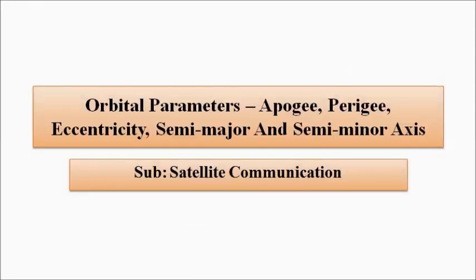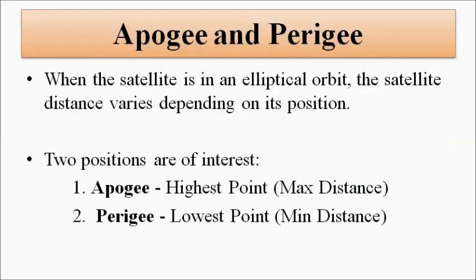Having discussed ascending and descending nodes, we'll now discuss other orbital parameters: apogee, perigee, eccentricity, semi-major axis, and semi-minor axis. These relate to the position or location of the satellite at various positions in the orbit and the key positions of significance in satellite communication. Apogee and perigee come into play when the satellite is in an elliptical orbit — they are not applicable for a circular orbit.